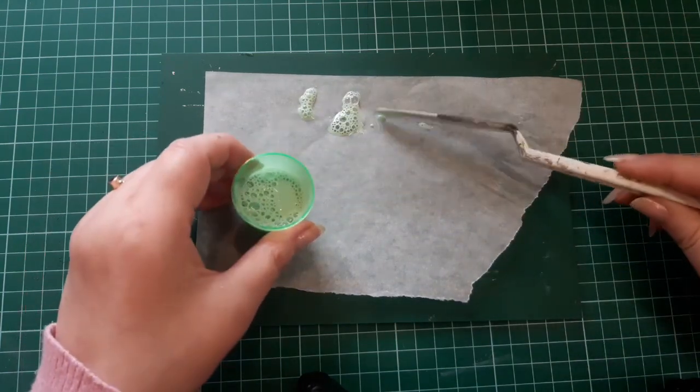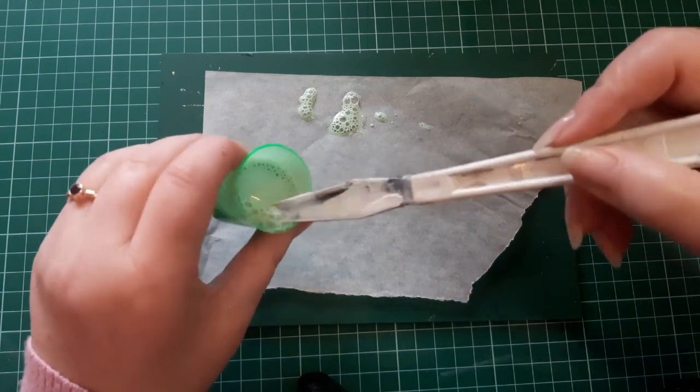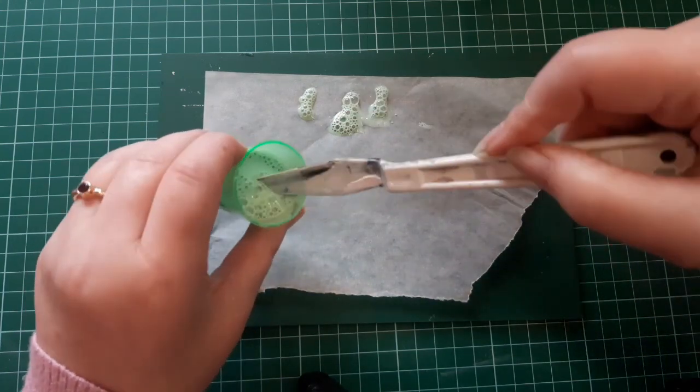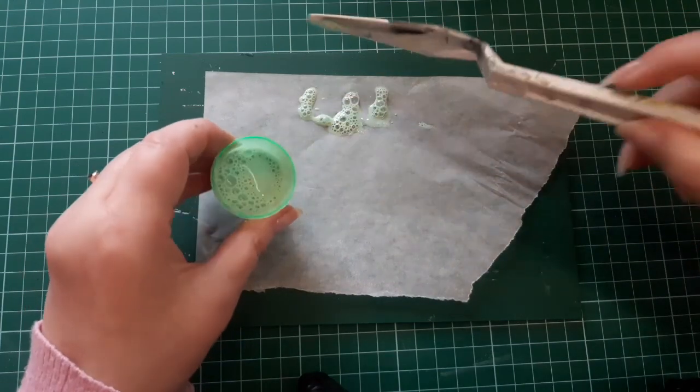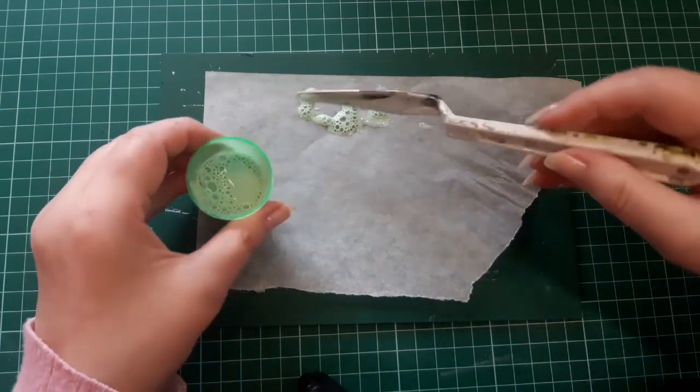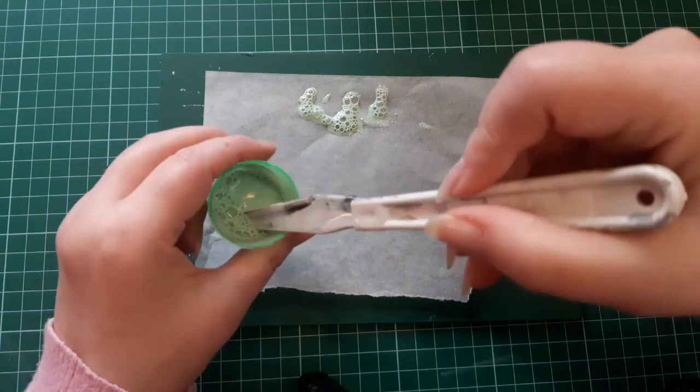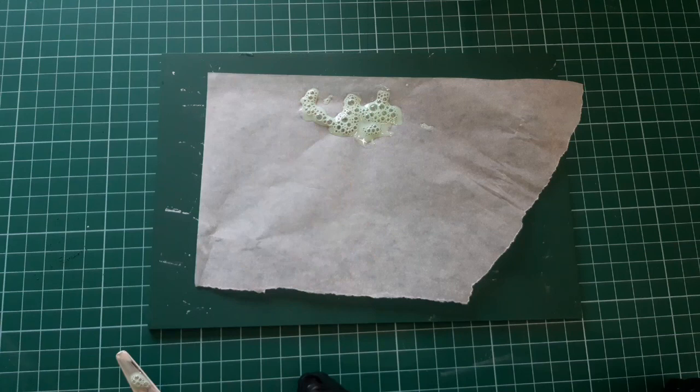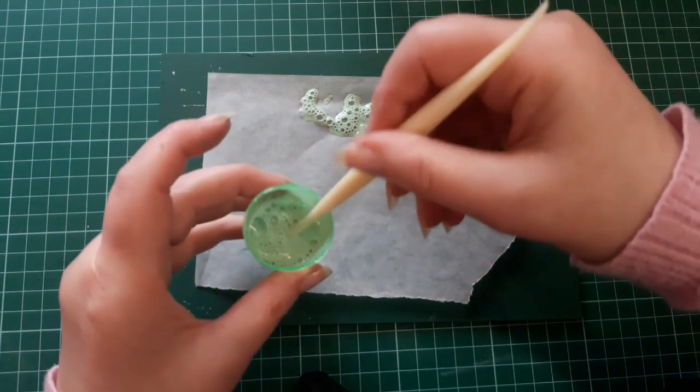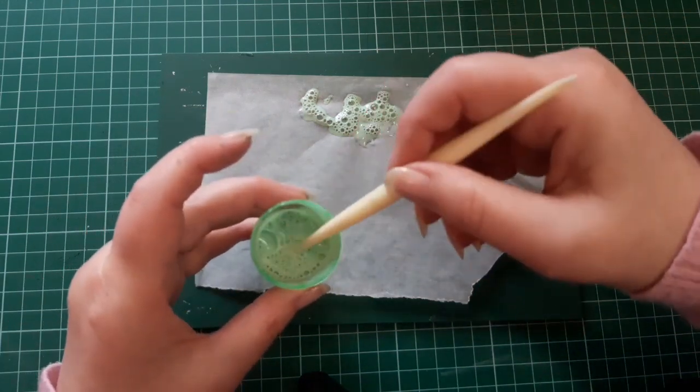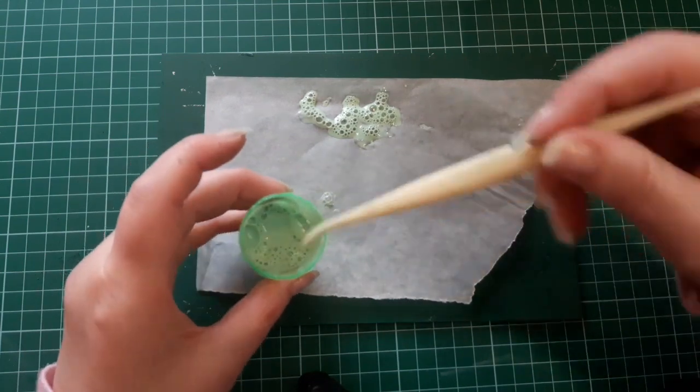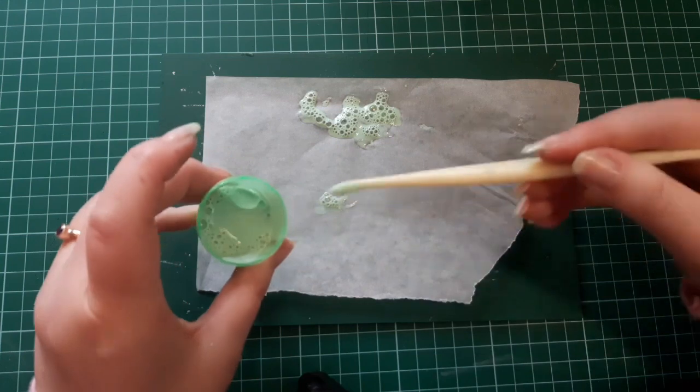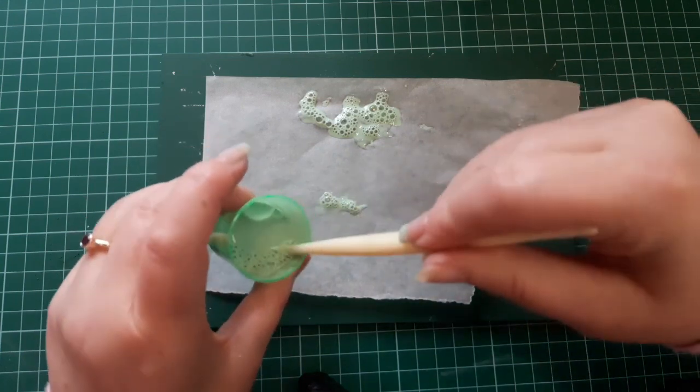I however was much too impatient to wait for shipping so decided to try my own experiment. I did a test using Mod Podge, acrylic ink, water and dishwashing liquid as well as one using Dimensional Magic instead of Mod Podge. This test ended up being a massive fail. I think I added too much water to both of my samples and my bubbles completely disappeared as it dried.